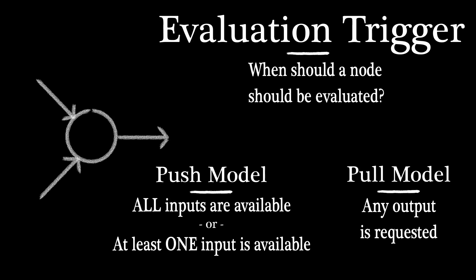In the pull model, there's only one choice. A node should be evaluated when any one of its outputs are requested. For nodes that have multiple outputs, it's up to the designer to determine if they want to cache the currently unneeded output or not.